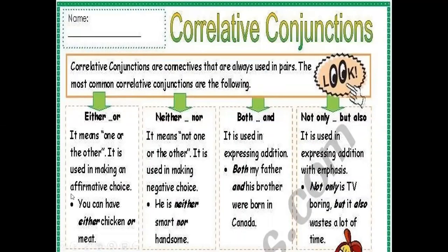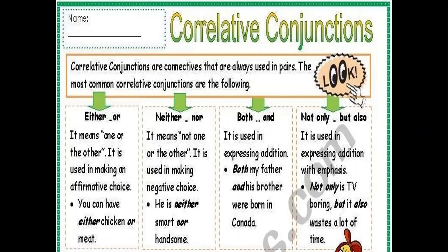Correlative conjunctions are connectives always used in pairs. The four most common are: 'either...or', 'neither...nor', 'both...and', and 'not only...but also'. 'Either...or' means one or the other — an affirmative choice: 'You can have either chicken or meat.' 'Neither...nor' means not any, not one or the other — used in negative choice: 'He is neither smart nor handsome.' 'Both...and' expresses addition: 'Both my father and his brother were born in Karnataka.' 'Not only...but also' expresses addition with emphasis: 'Not only is TV boring, but it also wastes a lot of time.'